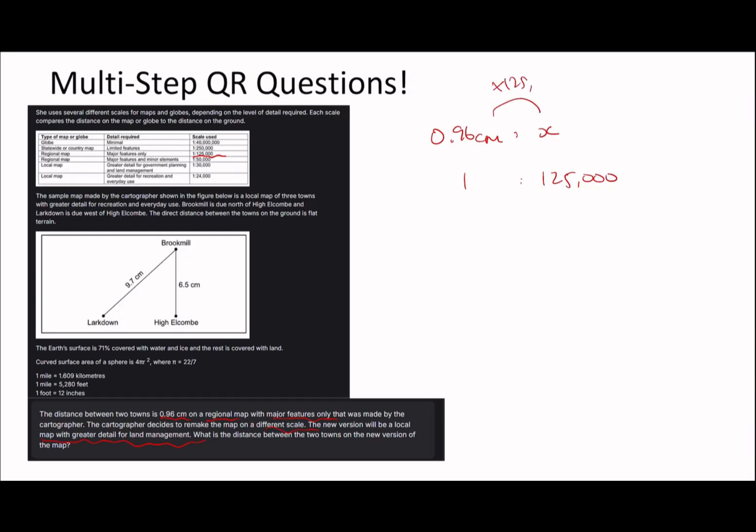So 0.96 cm to X is 1 to 125,000. If we times this number by 125,000 we'll find exactly how many centimeters the distance between the two towns is in real life. So you times it by 125,000 and you get X is 120,000 centimeters, which is 1.2 kilometers I guess. But that doesn't matter anyways. And now it says it's remaking it on the local map, greater detail for government planning and land management. So this one. So we need 1 to 30,000. If we're going 1 to 30,000 and we know we're going Y to 120,000 because that's what we're trying to find out, equals 1 to 30,000.